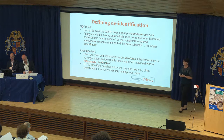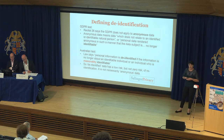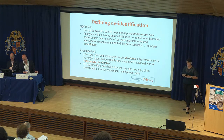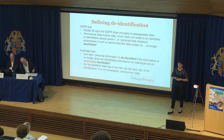Let's compare that with the test under Australian privacy law. This says that personal information — our version of personal data — is de-identified if the information is no longer about a person who is reasonably identifiable.